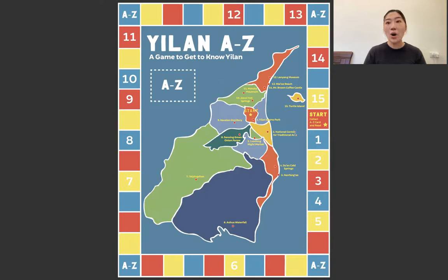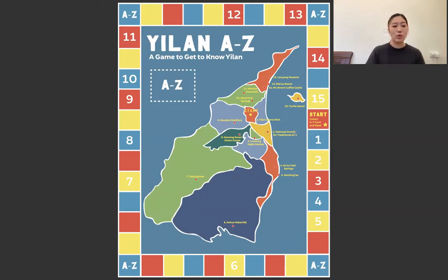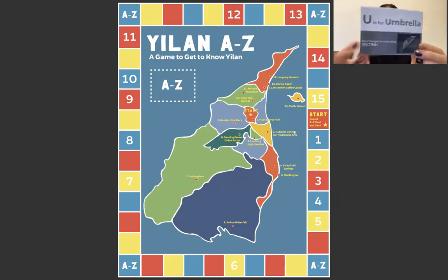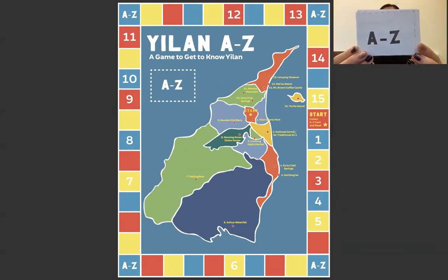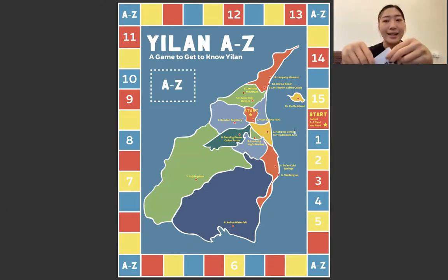讲完这些东西以后，你可以问：你觉得这个 game 的目标是什么？他们可能就会说不知道。This is a good time to 拿出来我们的两排卡。第一排卡是我们的 A through Z 卡，你可以给他们看，然后问他们：那你觉得我们 A through Z 卡要放在哪里呢？